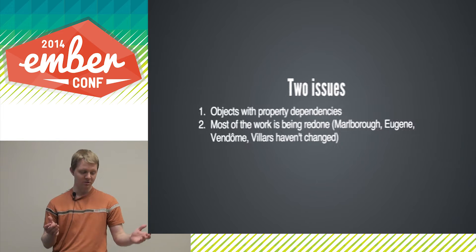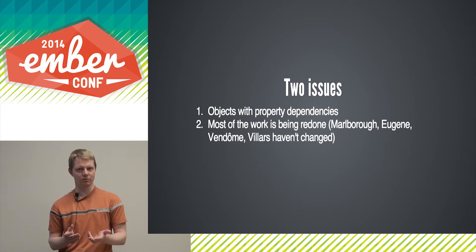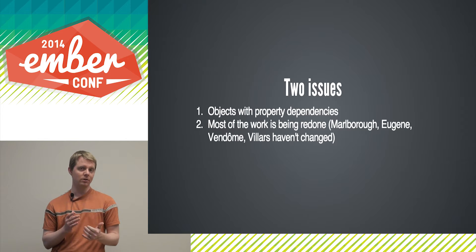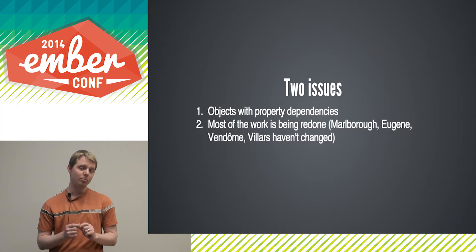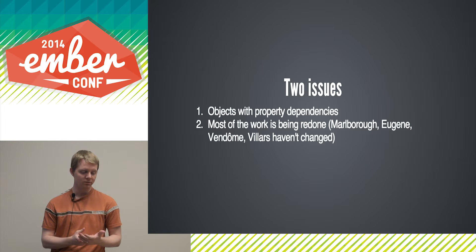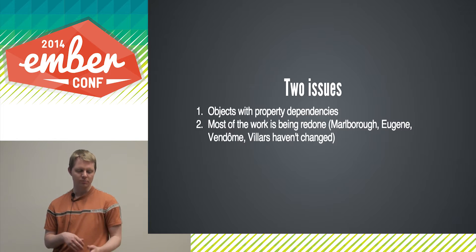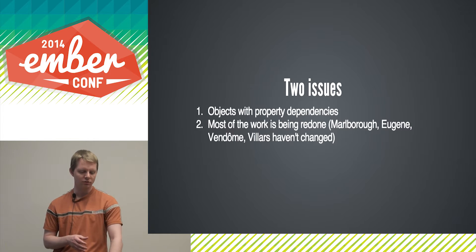So that's the basic idea, except there are two issues with this approach. One, this doesn't handle dependencies on properties of objects within the array. And also, a lot of work is being redone — we have to cycle through the entire array of Marlboro, Eugene, Vendome, and Villers even though they haven't changed at all, even though we just added one item to the dependent array.